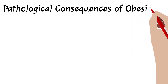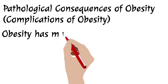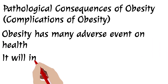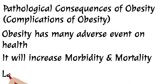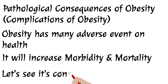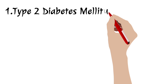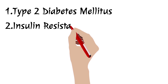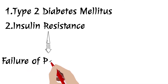Now we will see the pathological consequences — the complications of obesity. Obesity is a major public health problem with many adverse effects on health, increasing overall morbidity and mortality. The first complication is type 2 diabetes mellitus, a dangerous silent killer. Because of obesity, the patient develops insulin resistance, resulting in failure of peripheral tissues to utilize insulin and impaired glucose uptake.